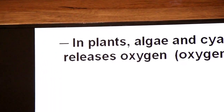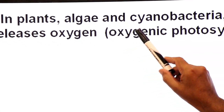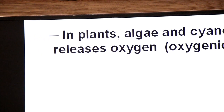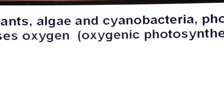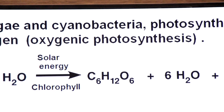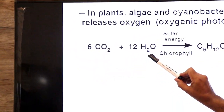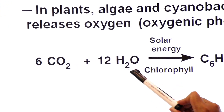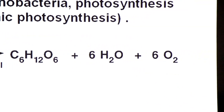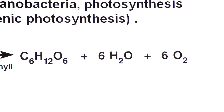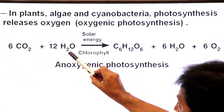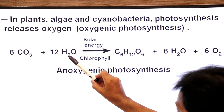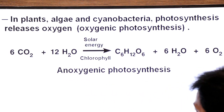Now let's look at examples of organisms performing oxygenic photosynthesis. Plants, algae, and cyanobacteria perform photosynthesis that releases oxygen because they use water. The breakdown of water produces molecular oxygen. However, some organisms do not use water in their photosynthesis; instead they use hydrogen sulfide, and oxygen is not released in their photosynthesis.